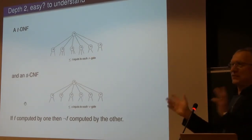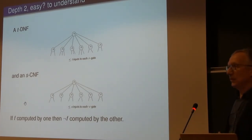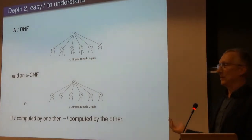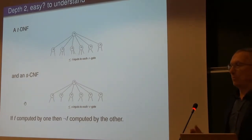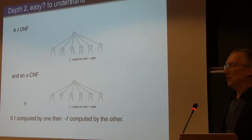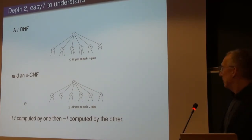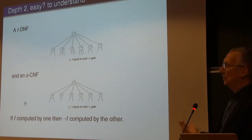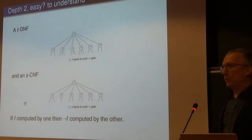Depth one is not interesting — that's just an AND or OR gate. Depth two is the first interesting case. If I give you such a circuit asking whether it computes the identically-one or identically-zero function, that's an NP-hard problem — that's satisfiability. But for computing simple functions they're fairly easy to understand. If one of these computes F, you can negate everything and propagate the negation through to get the computation of NOT F, so AND-of-ORs versus OR-of-ANDs doesn't matter much.